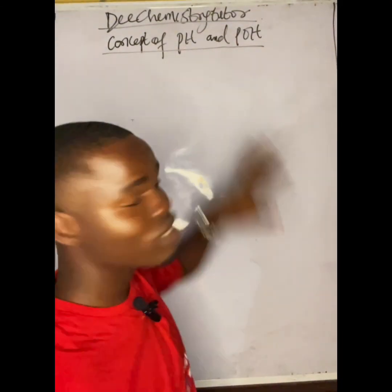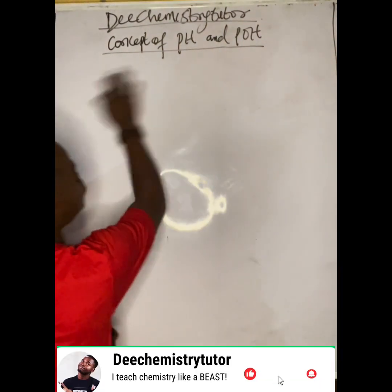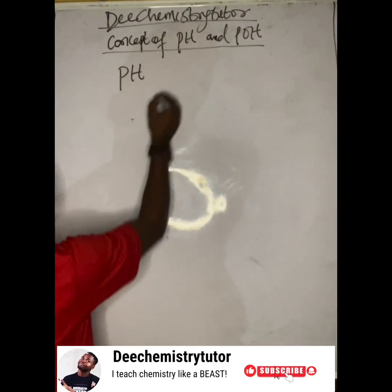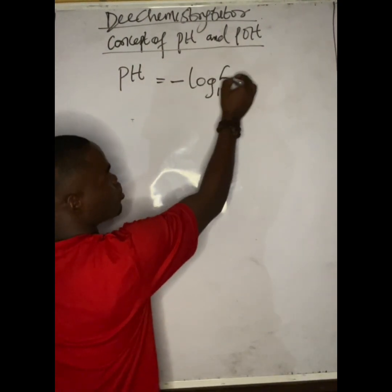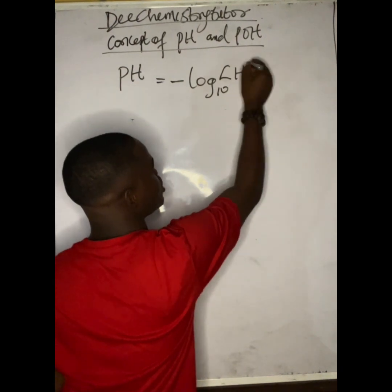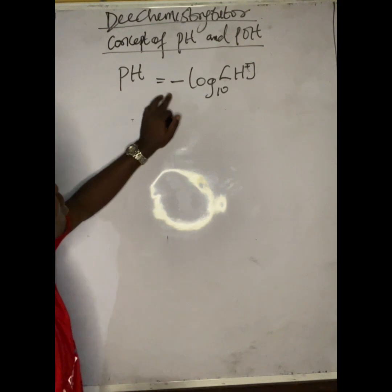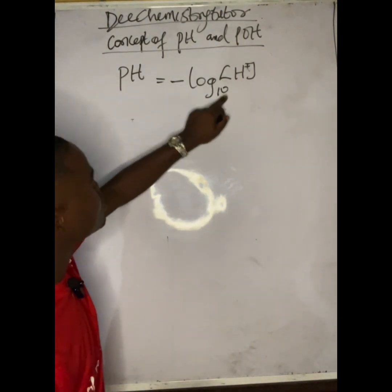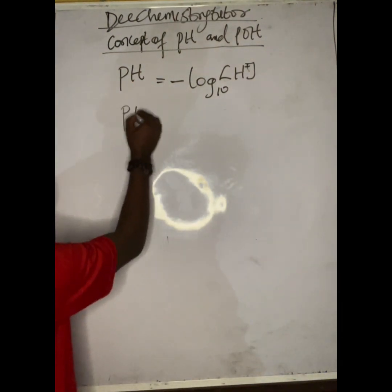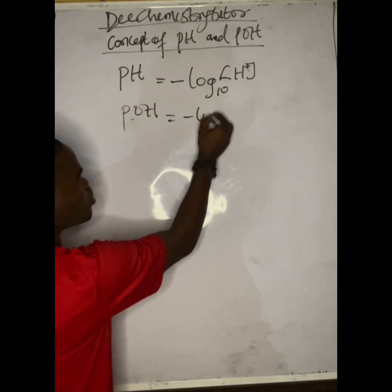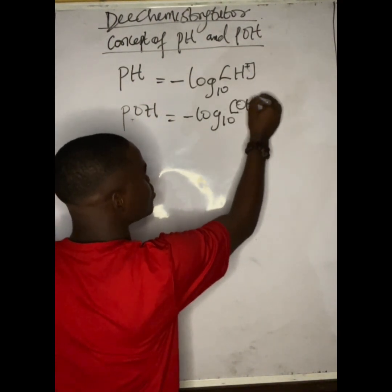We'll be discussing the concepts of pH and pOH. pH is defined as the negative logarithm to base 10 of the concentration of H⁺ ions. pOH is the negative logarithm to base 10 of the concentration of OH⁻ ions.